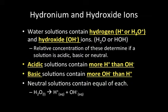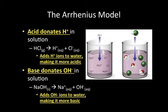The first is the Arrhenius model. The Arrhenius model says that acids donate hydrogen ions when placed in solution. For example, HCl is an acid, and when we put it in water it dissociates into H+ and Cl-. By adding more H+ ions to the water, we make it more acidic — that extra H+ from HCl breaking apart is what makes it acidic.